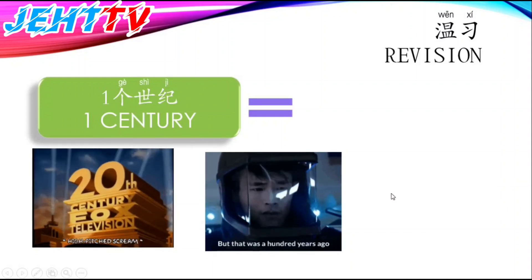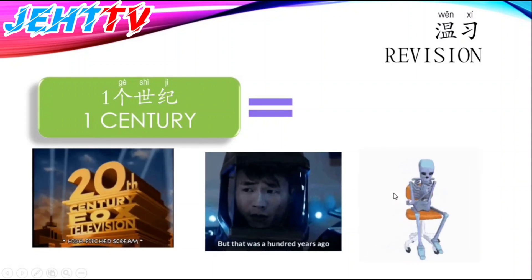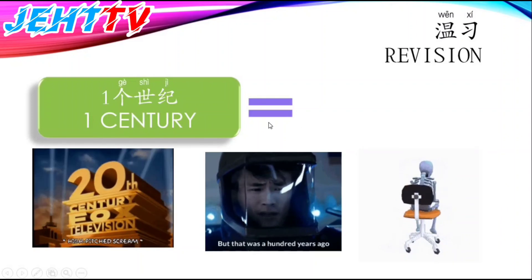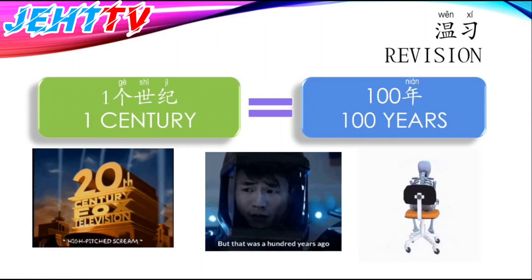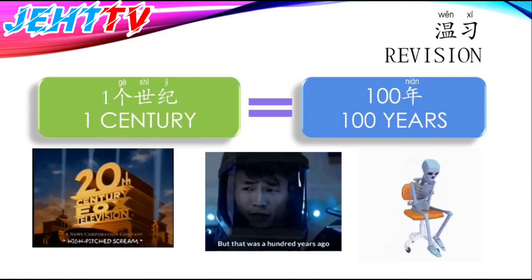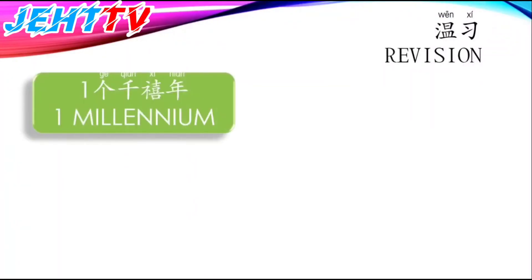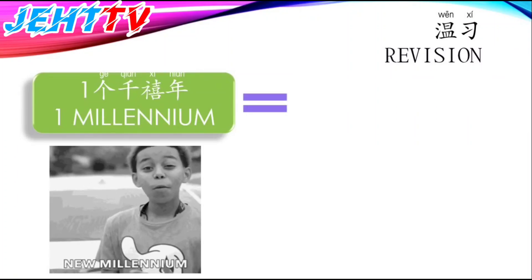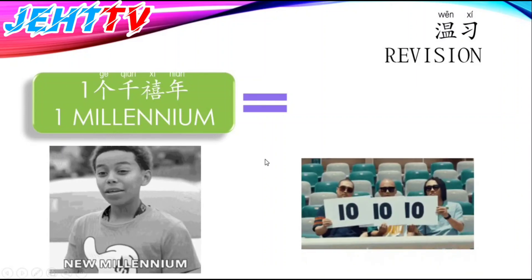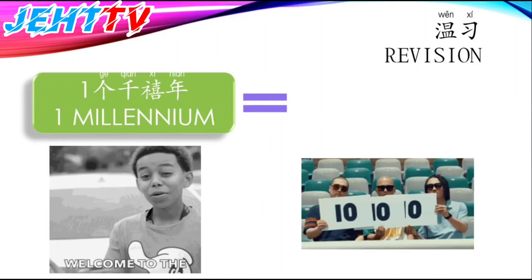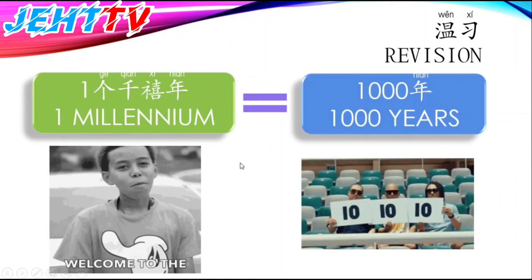The answer is 100 years. One century is equals to 100 years. And one millennium is equals to how many years? Try to find the answer from the video. Yes, one millennium is equals to one thousand years.